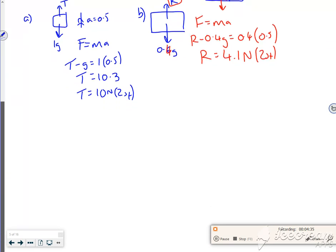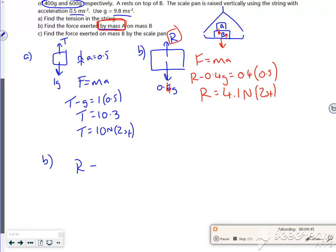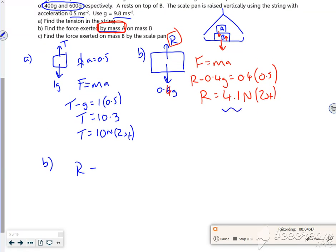So if I look at B, then I'd have something like the resultant minus this 4.1, because that's fighting against it, minus the 0.6G, so that's both of them pushing down, is equal to the mass 0.6 times 0.5.